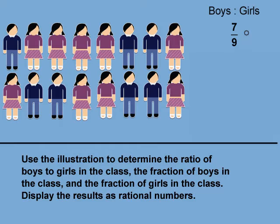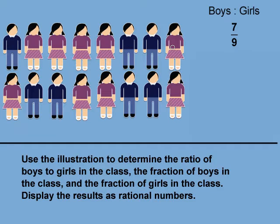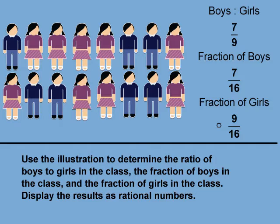This is a rational number since it meets the definition of a ratio of two integers. Now we need to calculate the fraction of boys in the classroom — this is a different ratio. We know the number of boys is 7, and the total number of students is 7 plus 9, which equals 16. We could also see that the array is 2 by 8, which also gives us 16. So the fraction of boys is 7 sixteenths, also a rational number. Finally, the fraction of girls is 9 sixteenths, also a rational number.